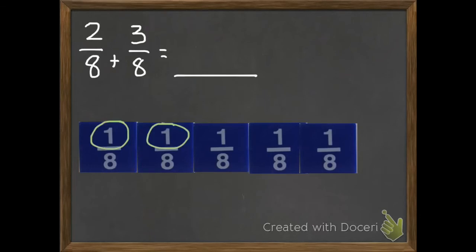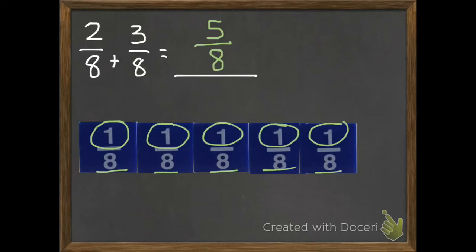So how many of those eighths do we have? One, two, three, four, five. We have five eighths. So we put our five there in our numerator. We want to keep that eighth the same. So we have five eighths.